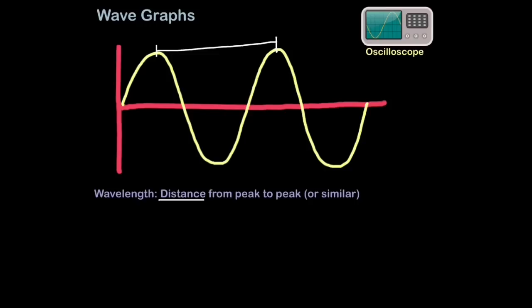The symbol for wavelength is this odd upside-down Y shape called lambda. Wavelength is generally measured in metres, but can be measured in any sort of unit of distance, centimetres, nanometres. So that's just one way we can measure wavelength. But we could also put it, for example, here.